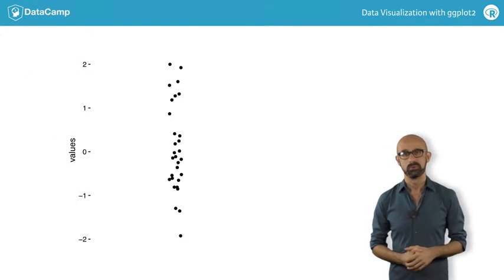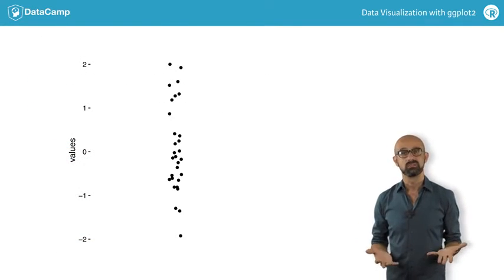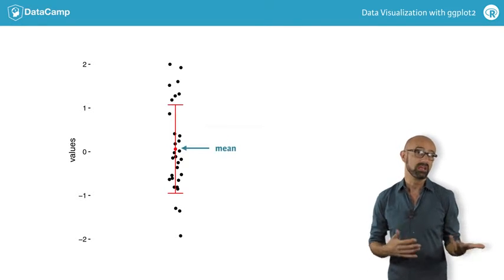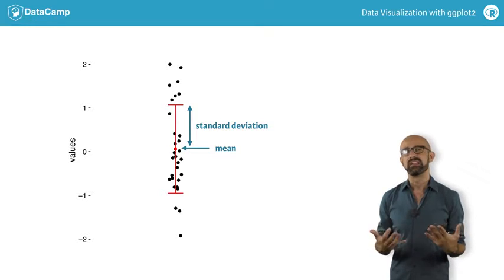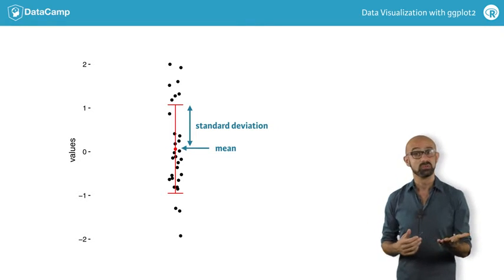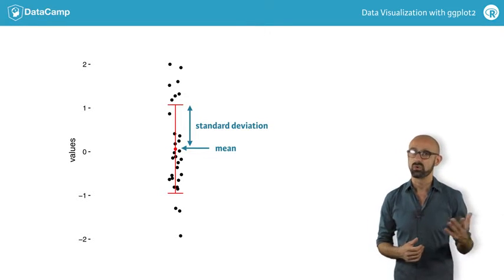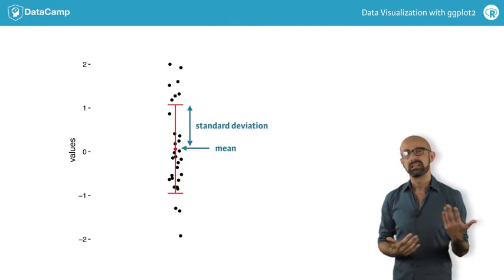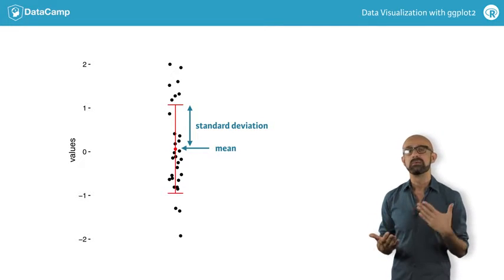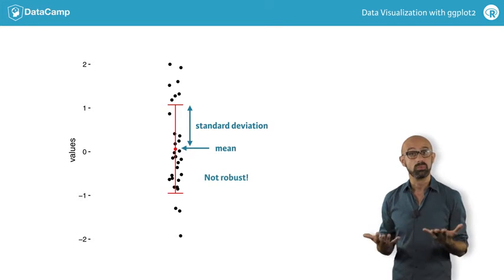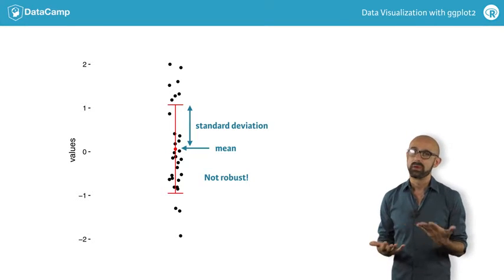Let's begin with a continuous variable. Typical descriptive statistics for the location and spread are the mean and standard deviation, as shown here. This is okay if our data is normally distributed, which we dealt with in the best practices chapter of the last course. Recall that the mean and standard deviation may not be the best representation of the data, in particular if we have extreme values that result in a skewed distribution. That's because the mean and standard deviation are not robust, so they'll be influenced by extreme values.